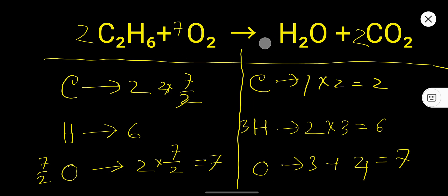Then here 3 times 2, you have to write here 6, then 2 times 2, you have to write here 4. So this is the actually balanced equation.